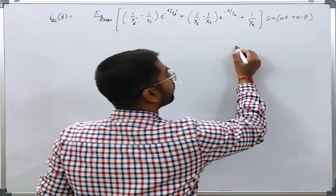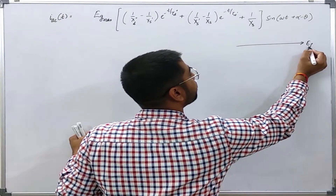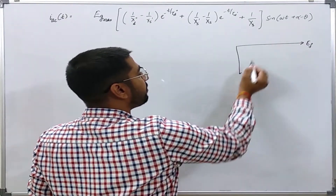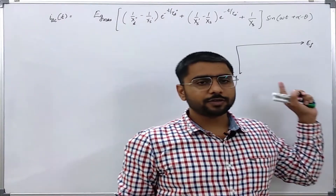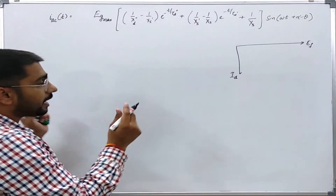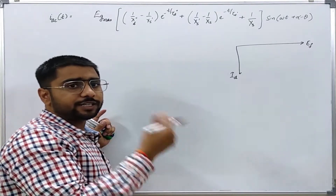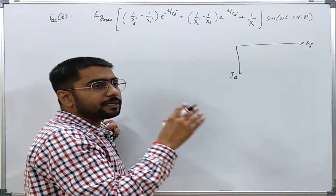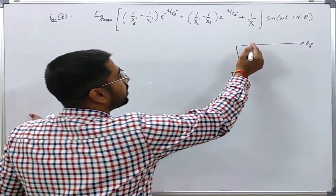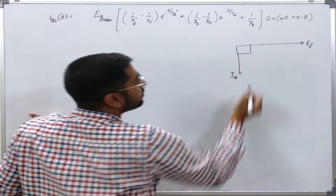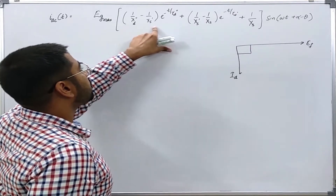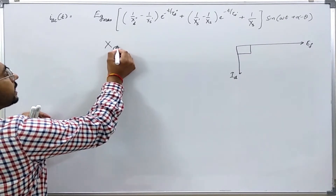Whenever we are dealing with the current which is in quadrature phase with the induced EMF, we use the direct axis reactance. We have already seen that whenever a generator is short-circuited at its terminals, the current is actually very close to the purely inductive current — about 90 degrees out of phase with the induced EMF. So, for the salient pole machine, we only use the direct axis reactance in place of XS.